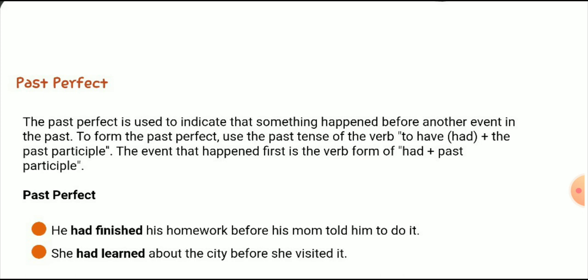'Had he not played football?' For the question word interrogative sentences, we use adverbs like 'when,' 'where,' or 'how' at the start of the sentence. After the adverb, we use the helping verb 'had,' then the subject, then the past participle, then the object. For example: 'When had he played football?'